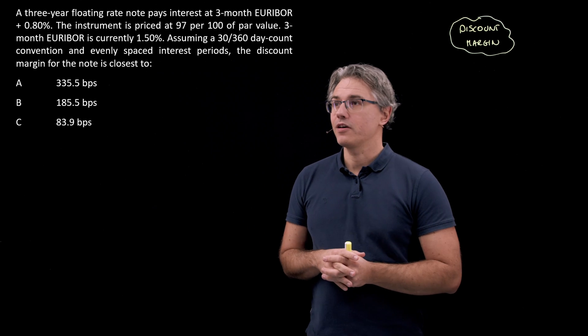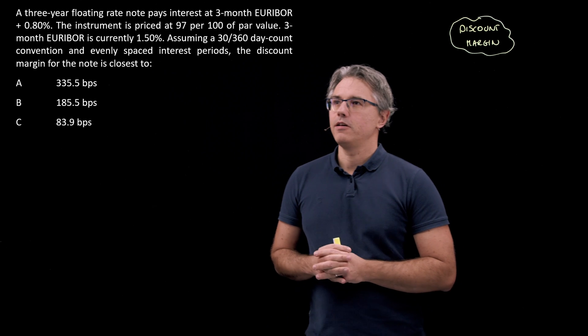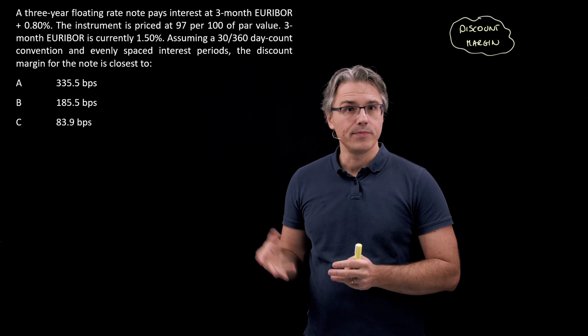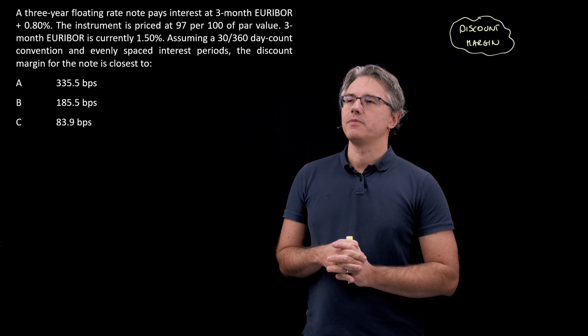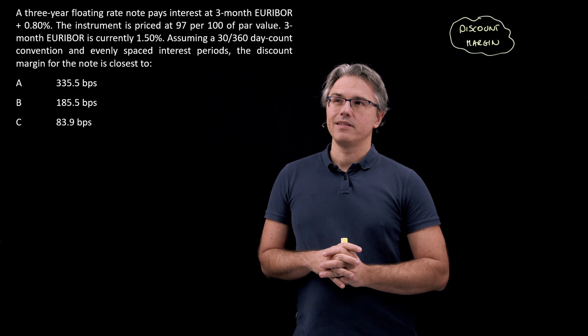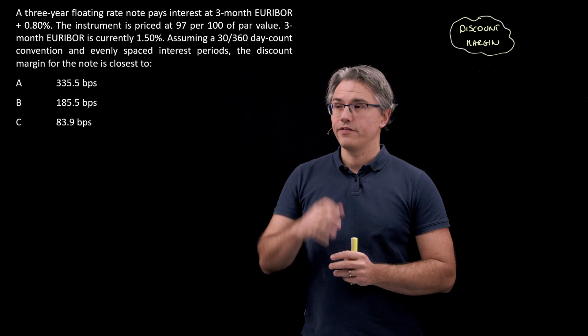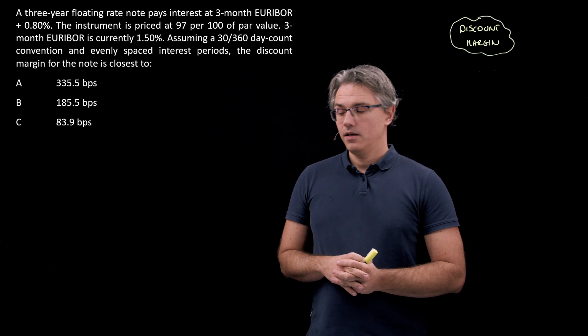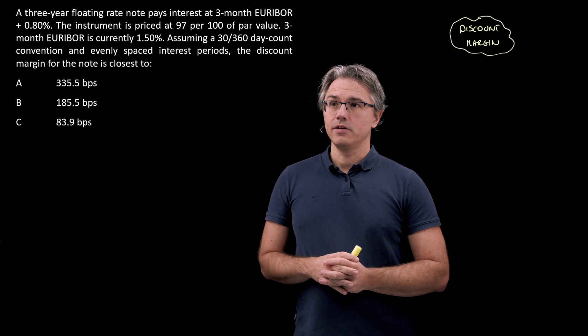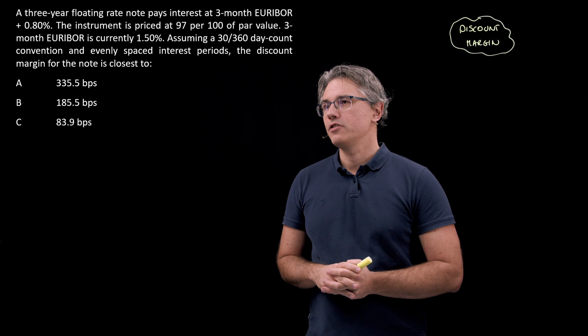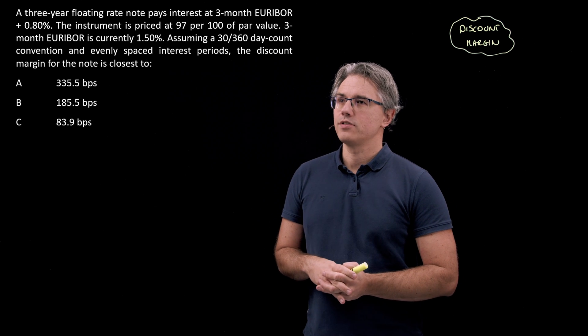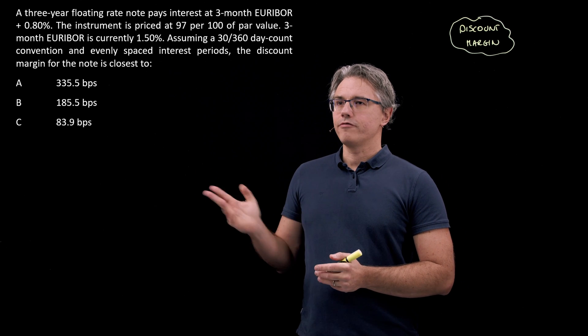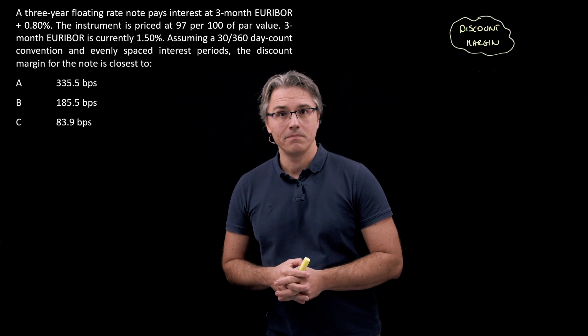This is the question I want us to solve. A three-year floating rate note pays interest at 3-month EURIBOR plus 0.8%. The instrument is priced at 97 per 100 of par value. 3-month EURIBOR is currently 1.5%. Assuming a 30/360 day count convention and evenly spaced interest periods, the discount margin for the note is closest to—and we've got three options measured in basis points.